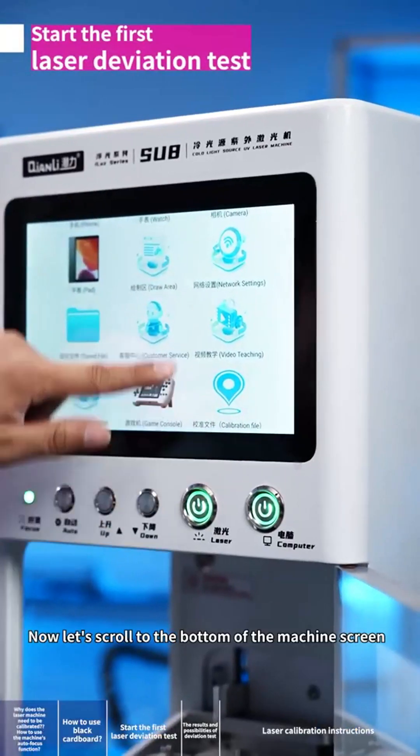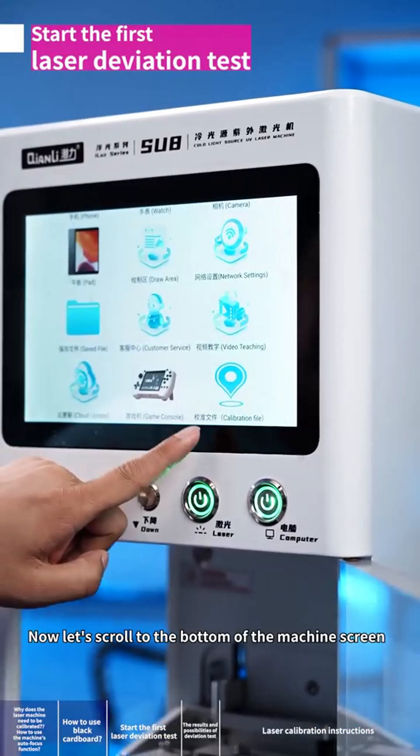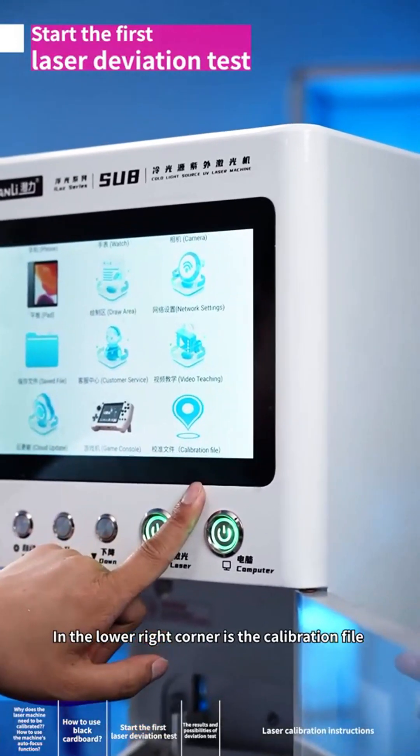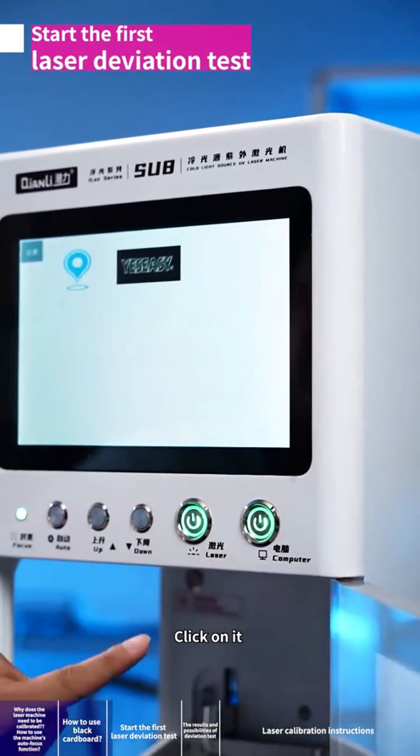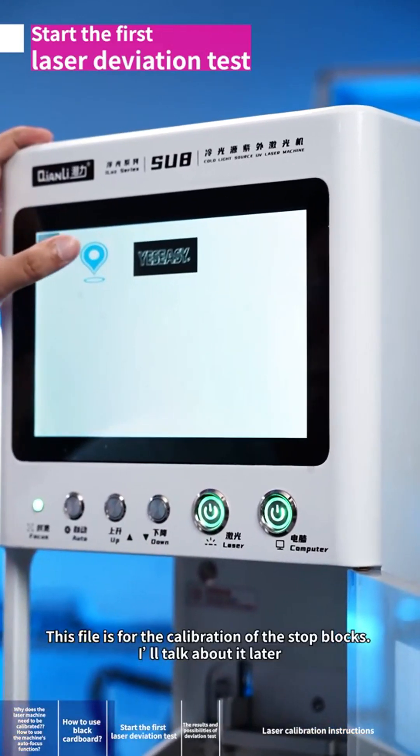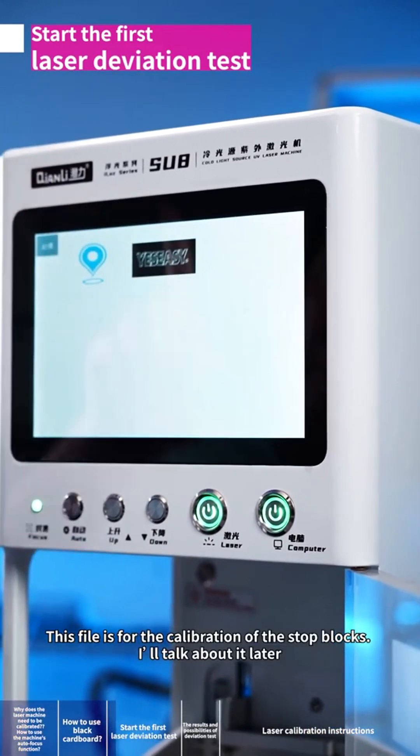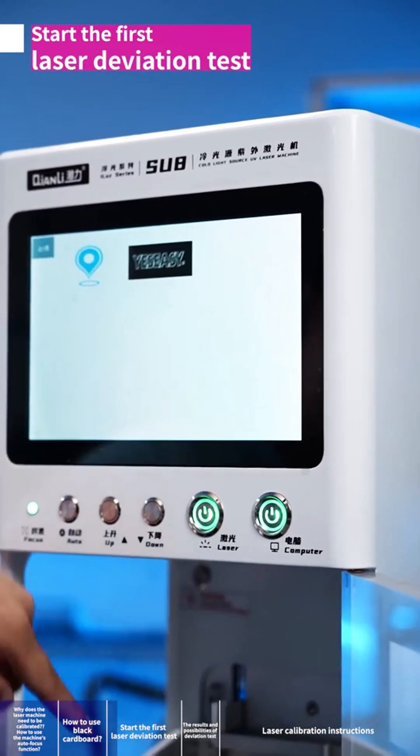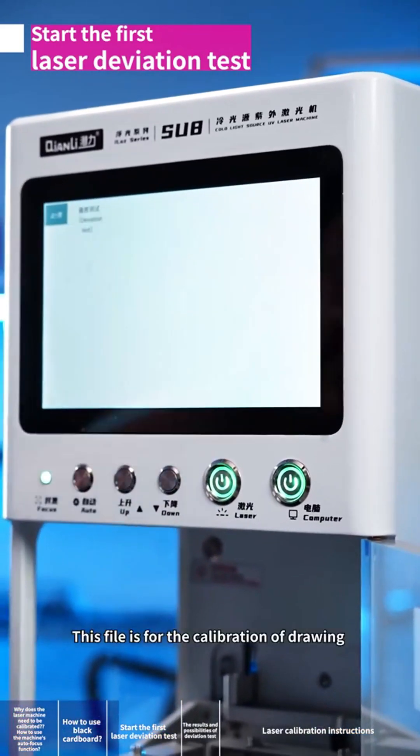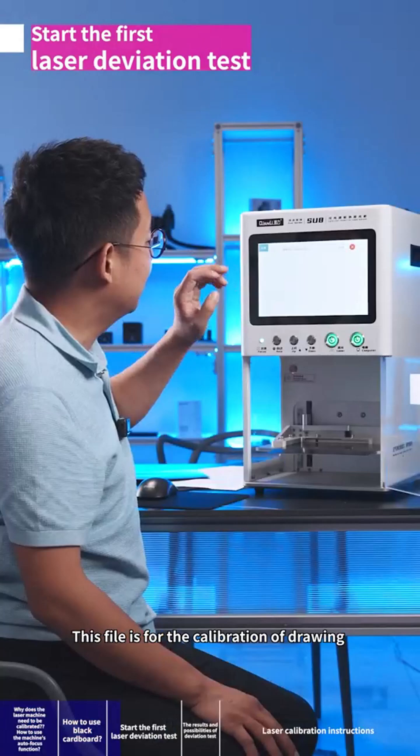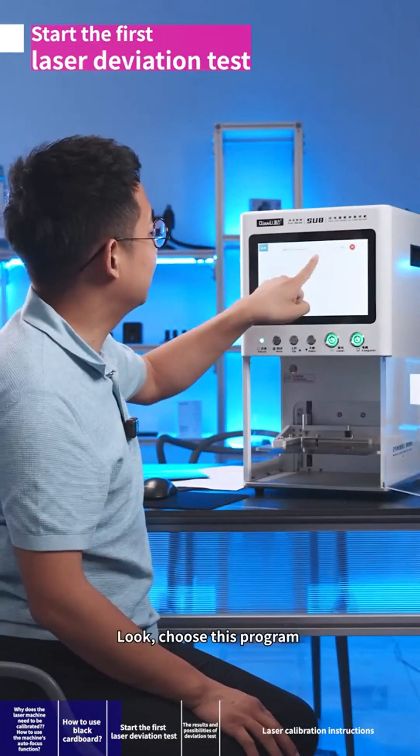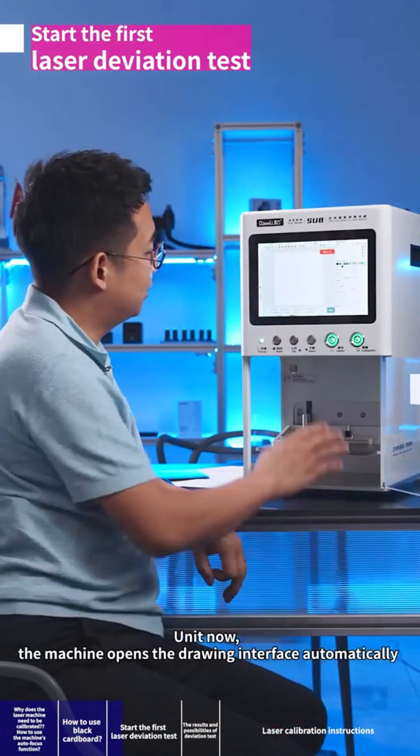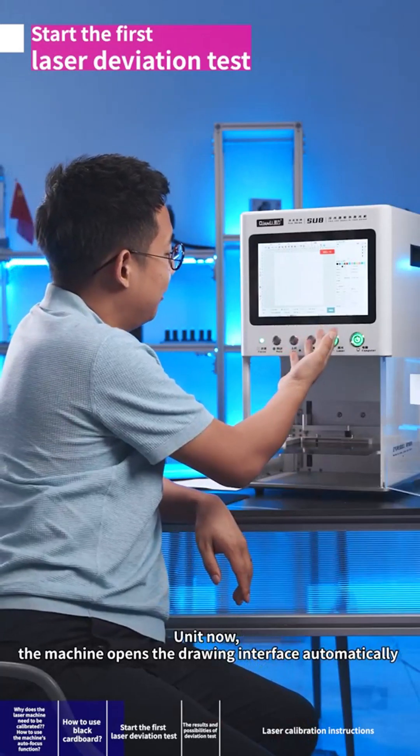Now let's scroll to the bottom of the machine screen. In the lower right corner is the calibration file. Click on it. This file is for the calibration of the stop blocks. This file is for the calibration of drawing deviation test. Choose this program and the machine opens the drawing interface automatically.